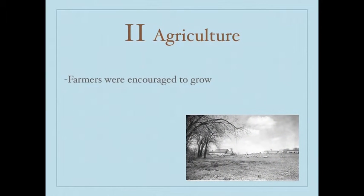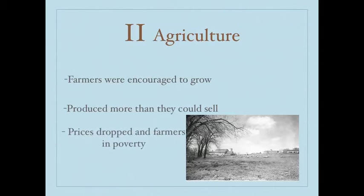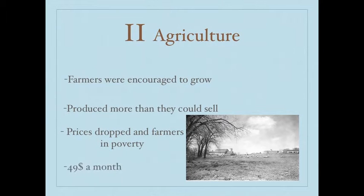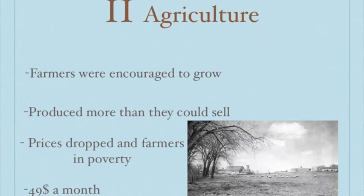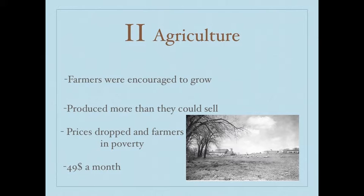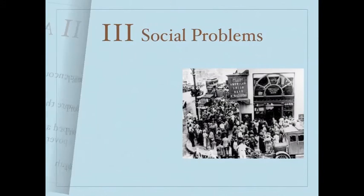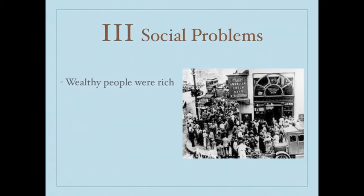The second one was agriculture. During the 1920s, people were encouraged to grow as much food as they could. Eventually they grew more than they could sell and prices dropped, leaving farmers in poverty. The average pay a farmer could get in the 1930s was $49 a month.